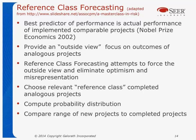Reference class forecasting came out of this Nobel Prize work, and they suggested that the best predictor of performance is actual performance of implemented comparable projects — that provides an outside view. If you're going to build a new system, look at what happened in similar systems built before. Reference class forecasting attempts to force the outside view and eliminate the optimism: choose reference class or analogous completed projects, compute the probability distribution of those, and then compare the range of the new project's estimates to the completed projects.